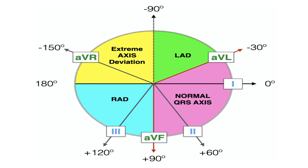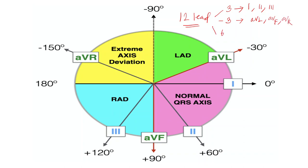Once we understand rate, we will go to the next step: how to interpret the axis in the ECG. Before interpreting the axis, you need to understand the normal axis values. In a normal 12-lead ECG we have 3 limb leads — Lead 1, Lead 2, Lead 3 — and 3 augmented limb leads — AVL, AVF, and AVR — and 6 chest leads V1 to V6. Only the limb leads and augmented limb leads are used for axis calculation; the chest leads are not used for axis.